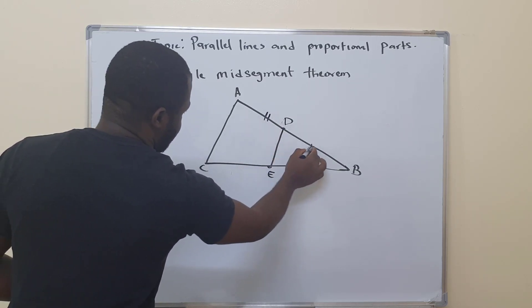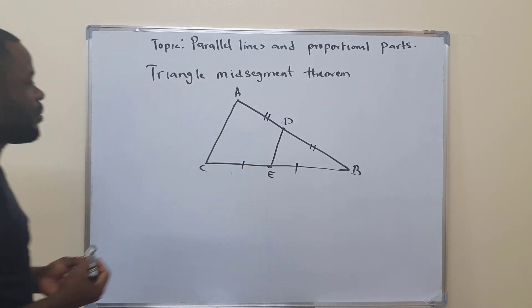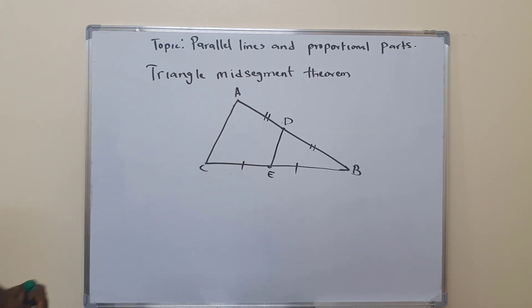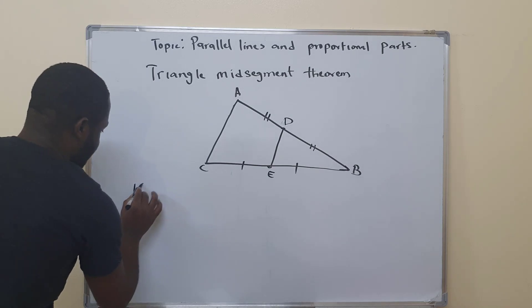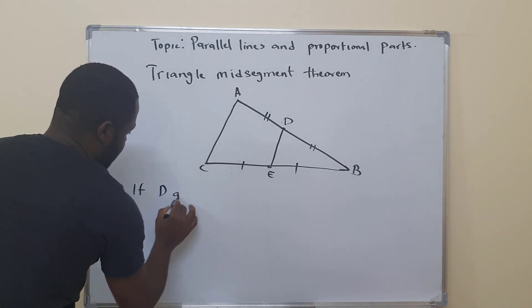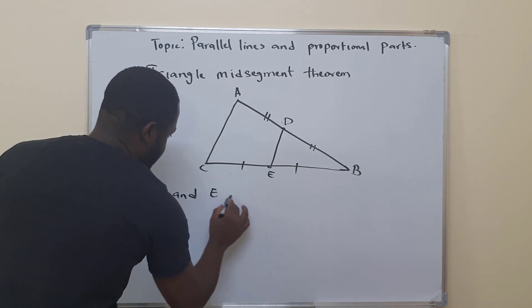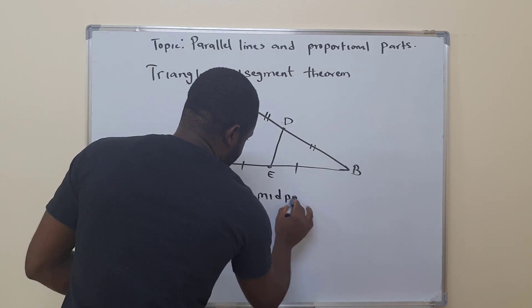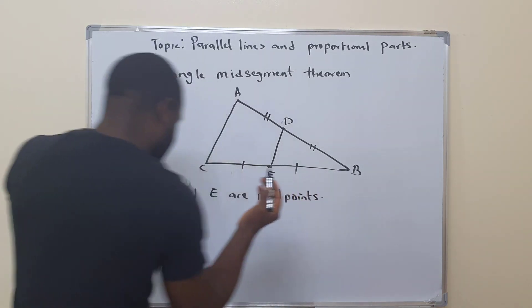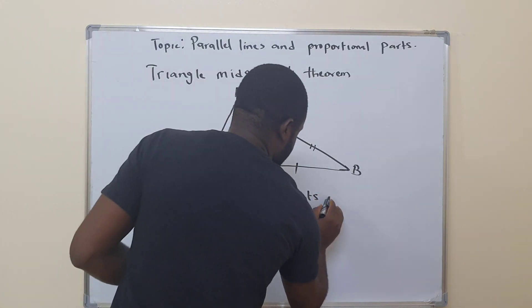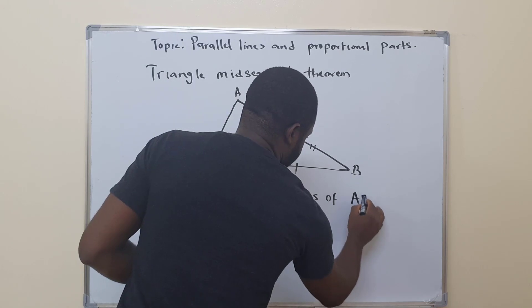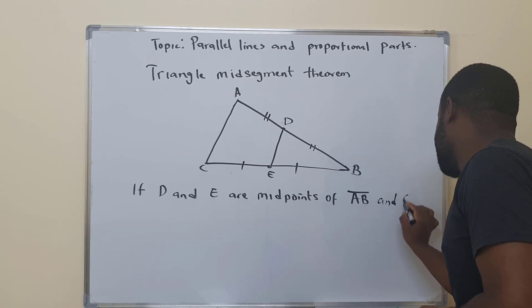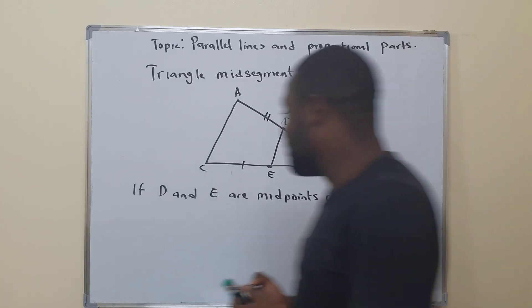This side is congruent to this side. This side is also congruent to this side. Now, what the triangle midsegment theorem says is that if D and E are midpoints of segment AB and segment CB respectively, then...